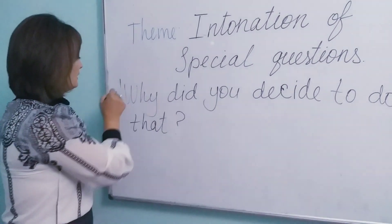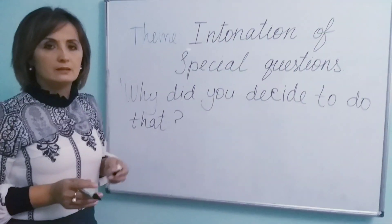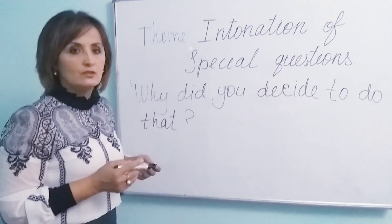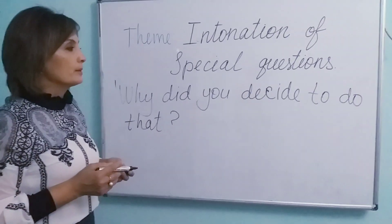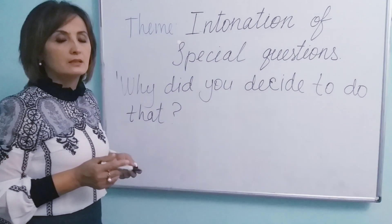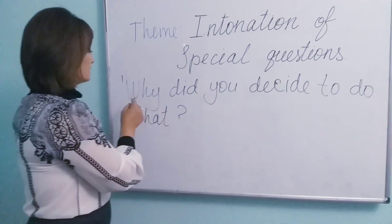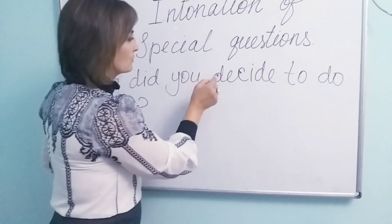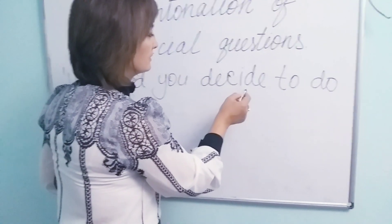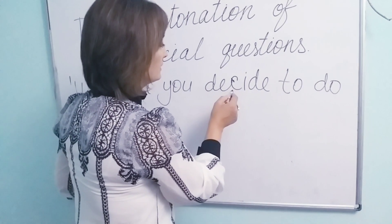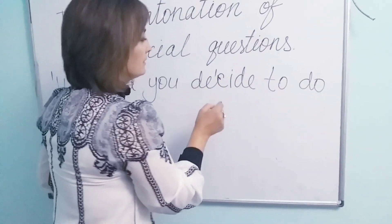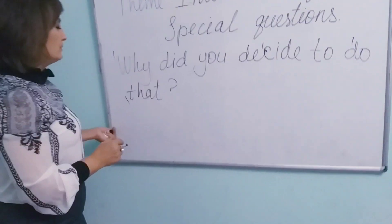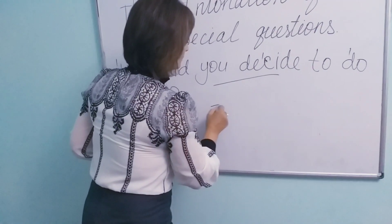Let's put the stress marks. If you can remember, in our last lesson I told you that words are divided into content words and structure words. Content words are notional parts of speech: nouns, verbs, pronouns, adjectives, and numerals. Structure words are auxiliary verbs, articles, particles, prepositions, and conjunctions. So 'did' is an auxiliary verb and is not stressed. The pronoun 'you' is also a structure word. The word 'decide' is a content word — it has two syllables and the second syllable is stressed: de-CIDE. The demonstrative pronoun 'that' is also stressed.